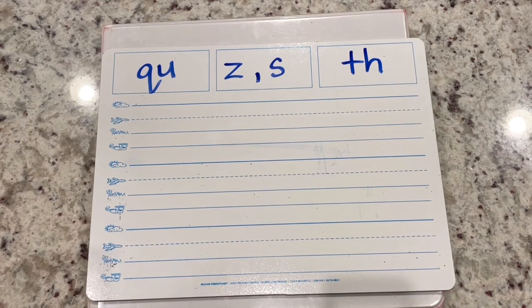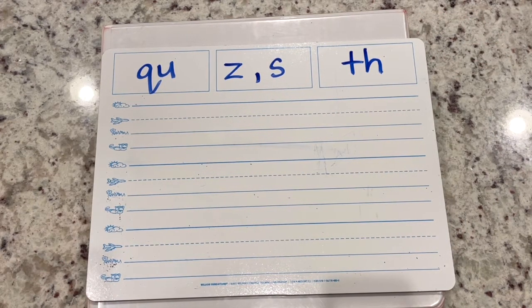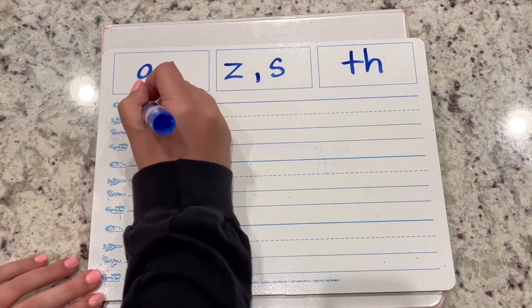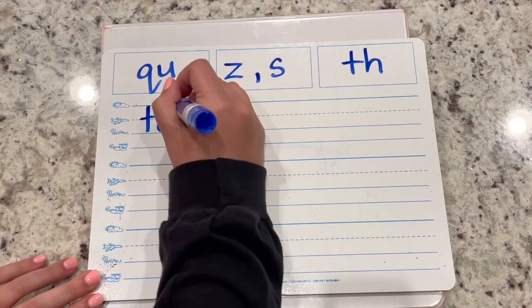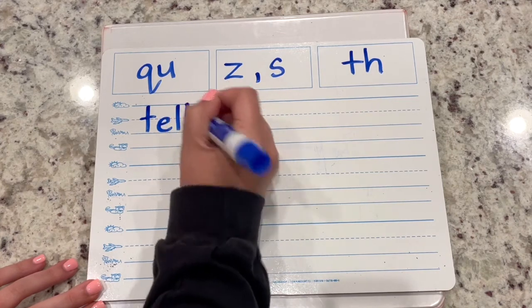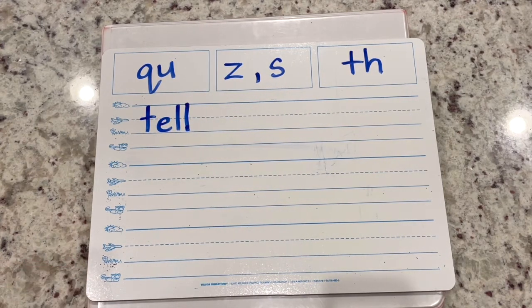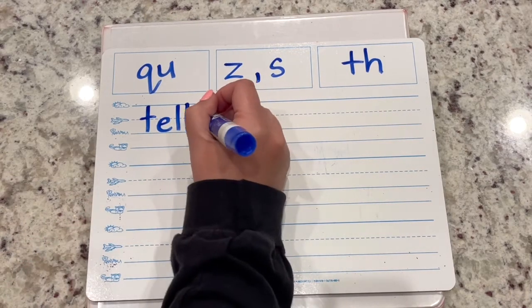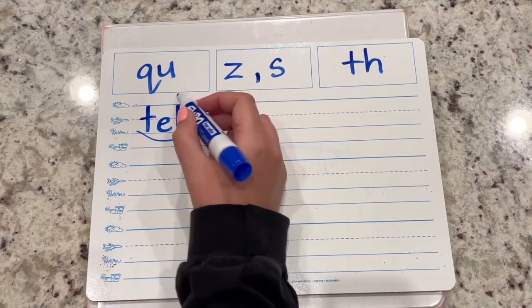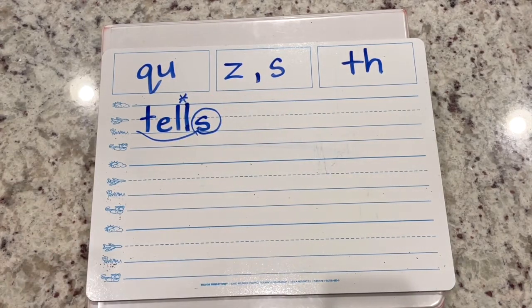Try the word tells. The base word is tell: T-E-L-L. I know it needs a bonus L. What do you add to make it say tells? Suffix S. Great job. You can scoop the base word, circle your suffix, and put a star over your bonus letter.